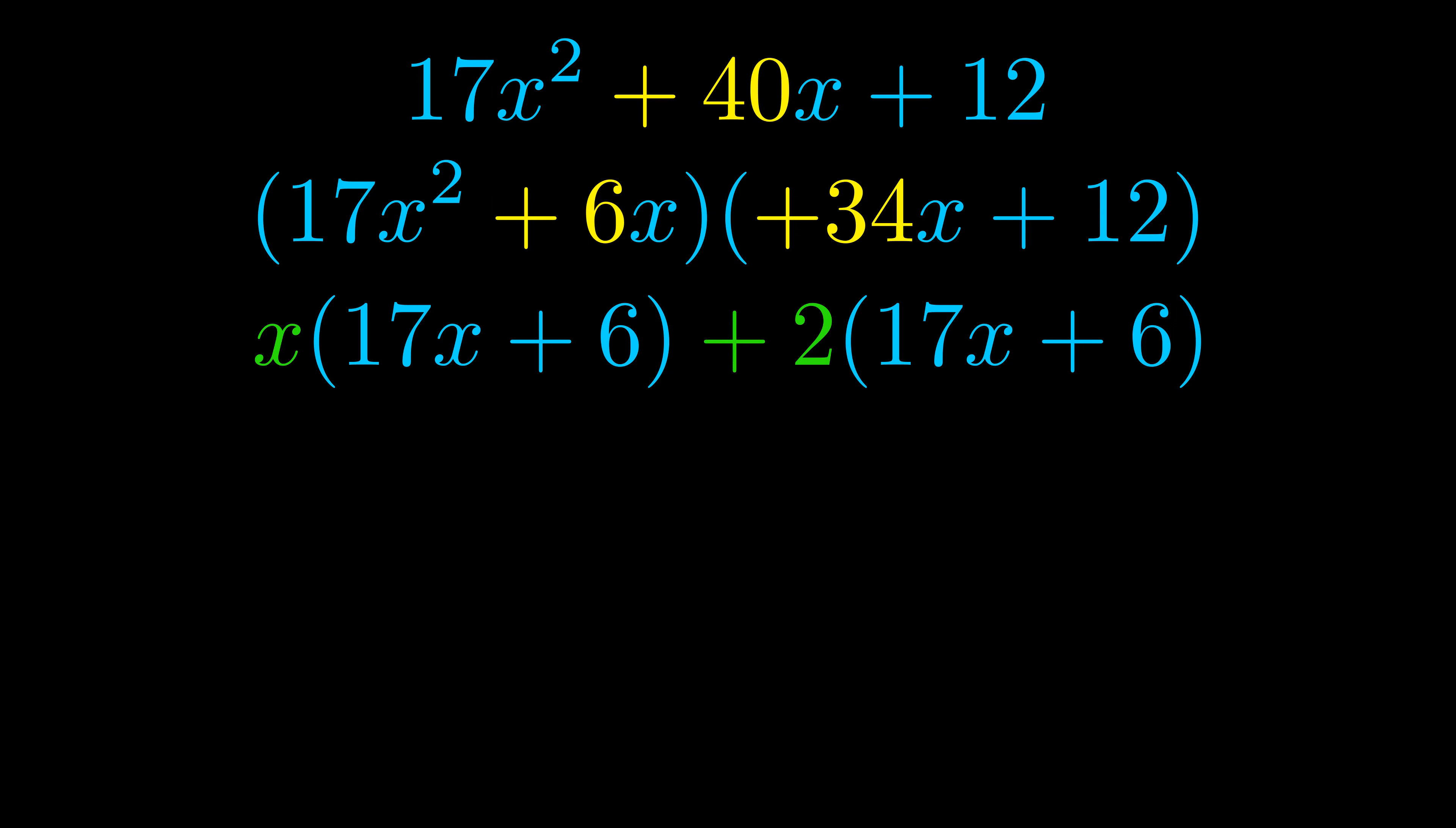Notice also how what remains inside of the parentheses is the same in both cases. The blue values are the same. Those blue values will become one of our factors and we will combine the two green values, the GCFs that we pulled out to get the other one. And that is our fully factored equation.